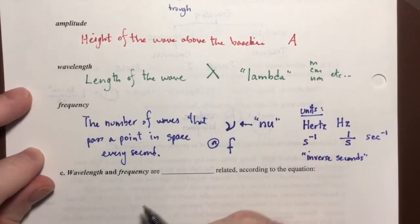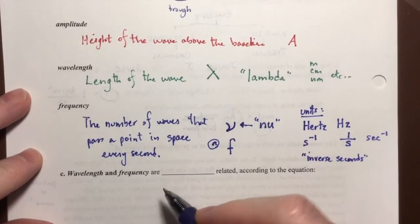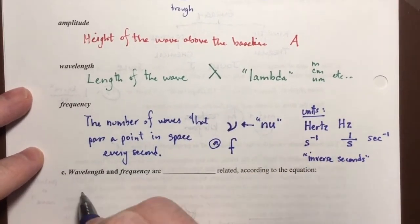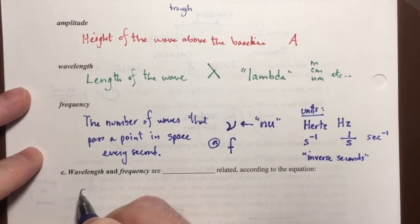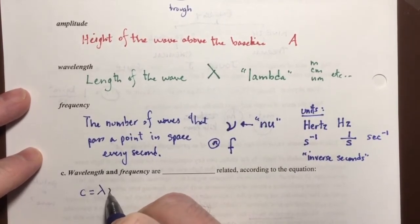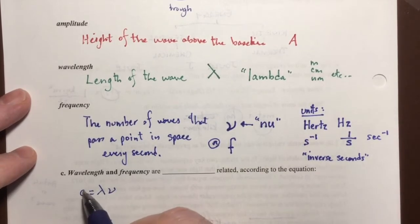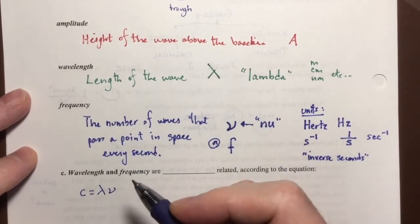There's an equation that links wavelength and frequency mathematically, and it is this equation: c equals lambda nu, where c is a constant.